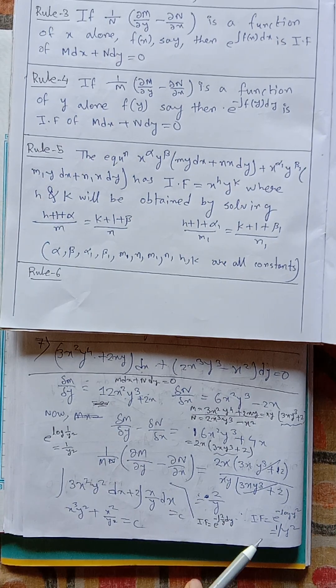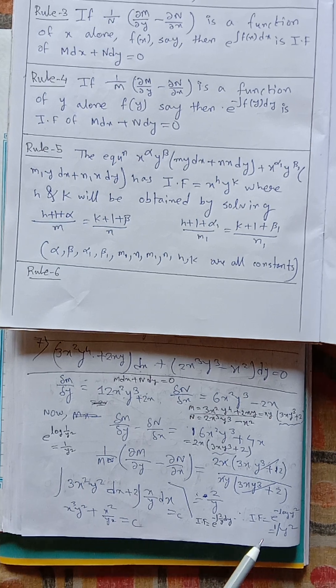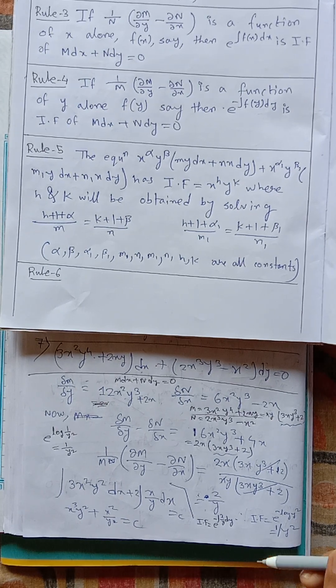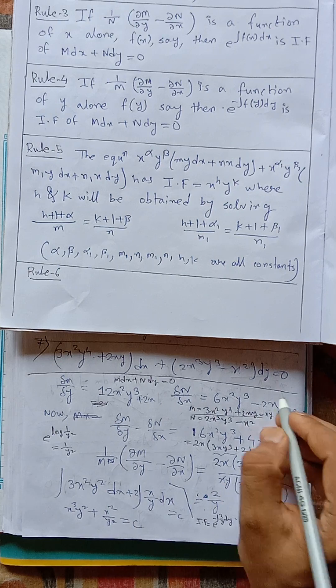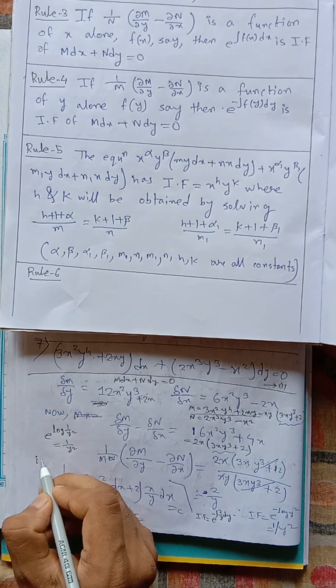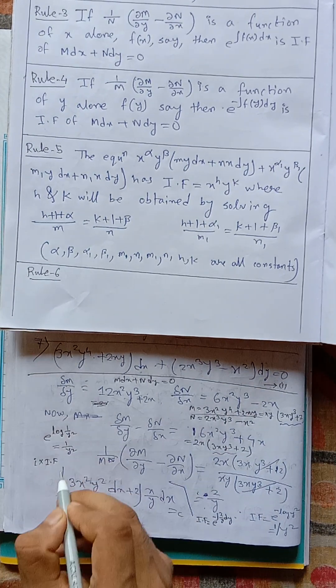After getting the value of IF, we have to multiply this with the given equation 1. So, equation 1 into IF, we get and then integrating.